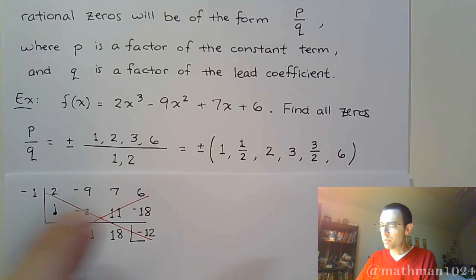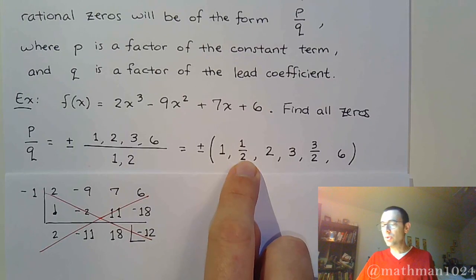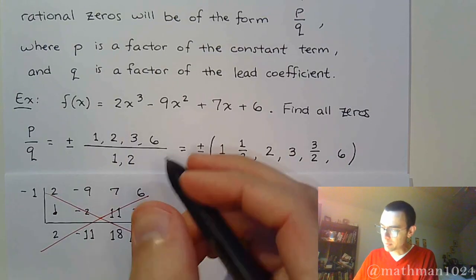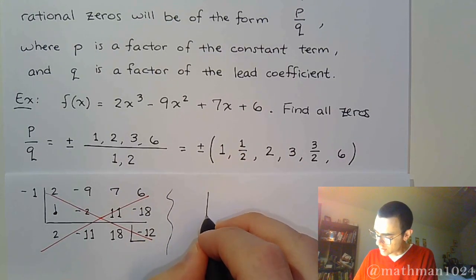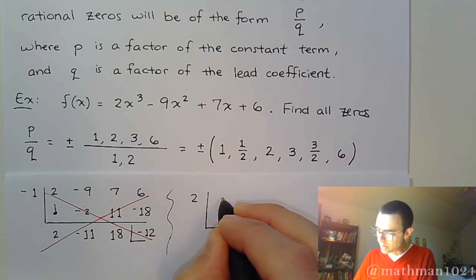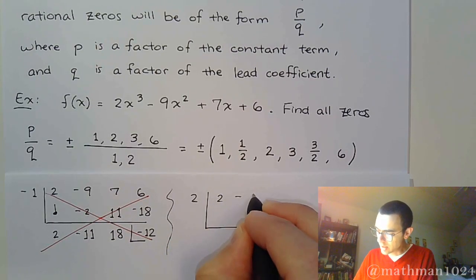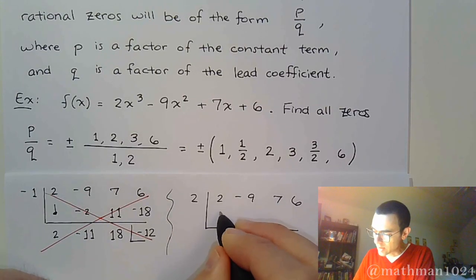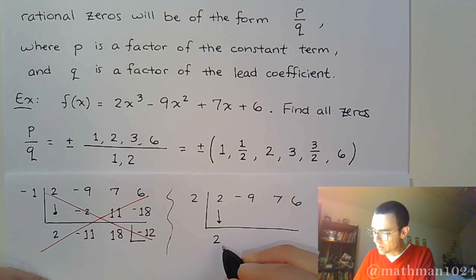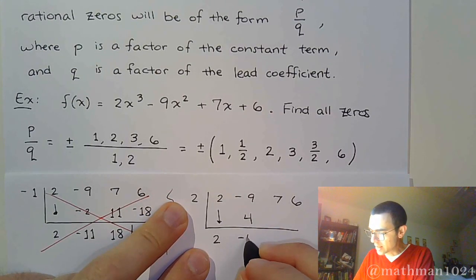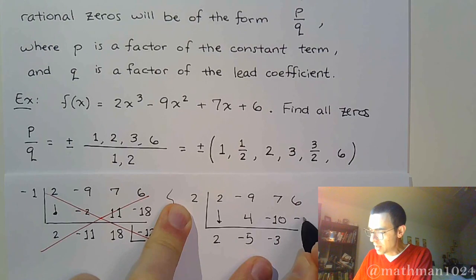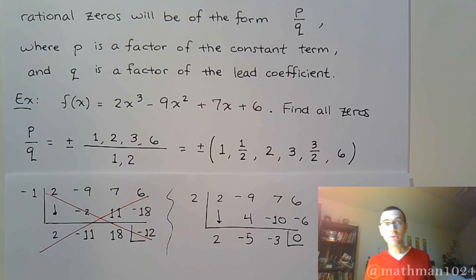The next number to try is 2 — I don't want to try the one-half fraction yet. So let's do synthetic division with 2: coefficients are 2, negative 9, 7, and 6. Pay attention to your signs. Bring down the 2. Multiply to get 4; add to get negative 5. Multiply to get negative 10; add to get negative 3. Multiply to get negative 6; add — and I finally get a remainder of zero, which is great.